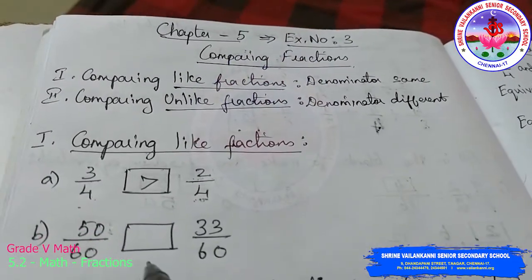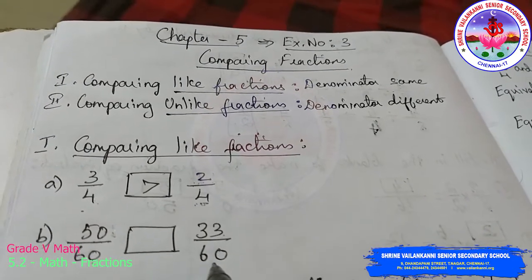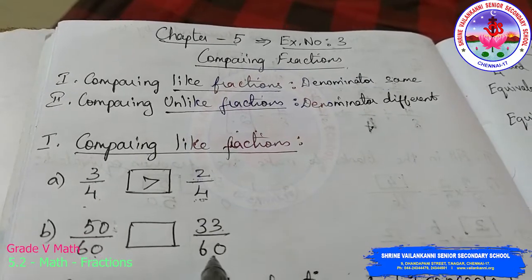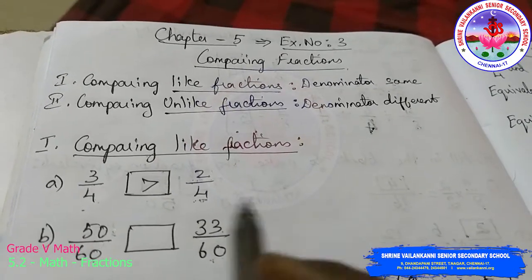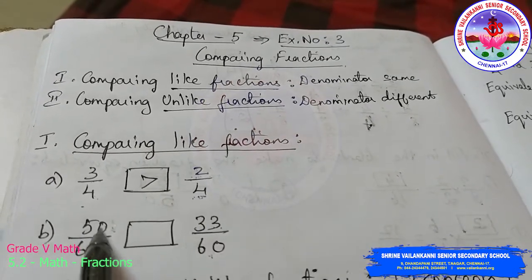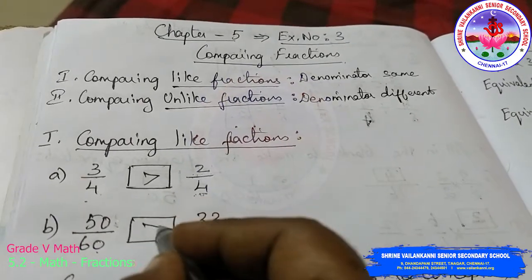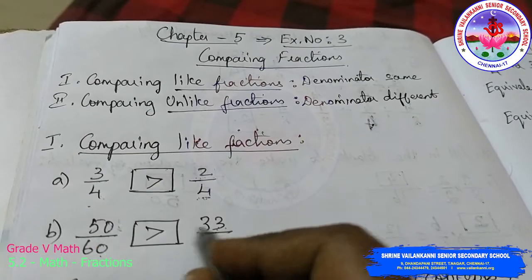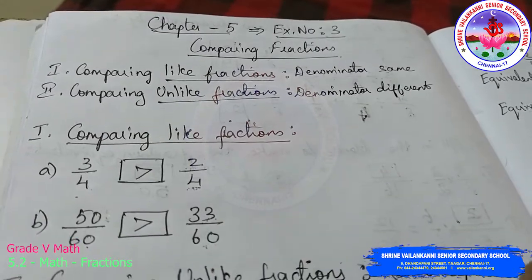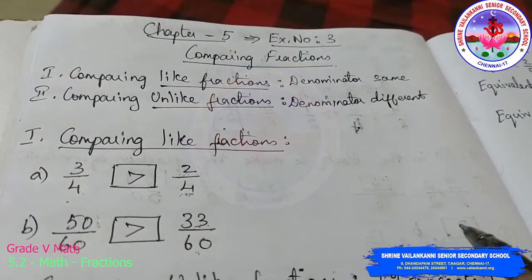Let me show one more example for like fractions: 50/60 and 30/60. The denominators are the same — 60 and 60. When denominators are the same, you just compare the numerators to see which is bigger and which is smaller. 50 is greater than 30, so I am concluding 50/60 is greater than 30/60. Comparing like fractions is very simple.